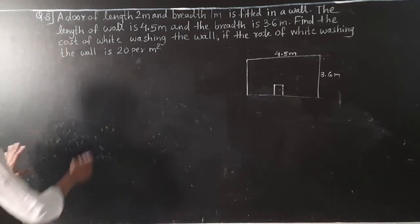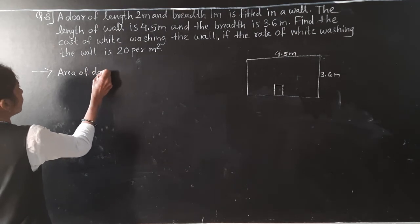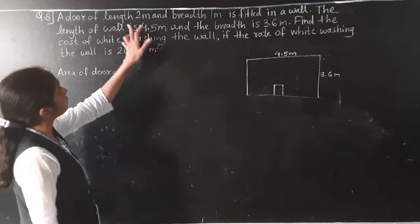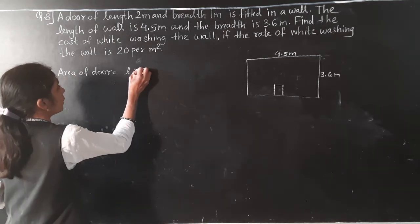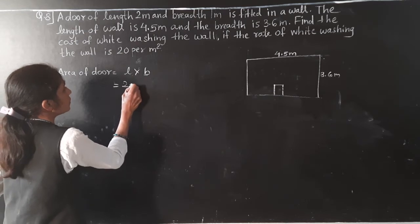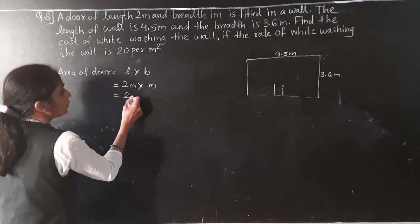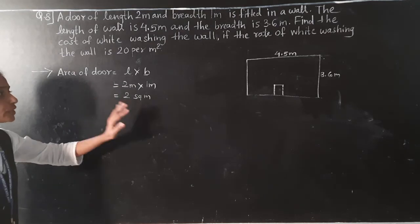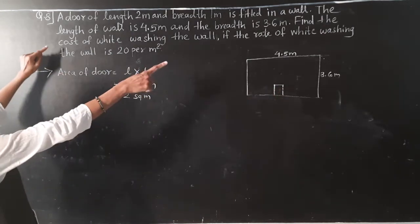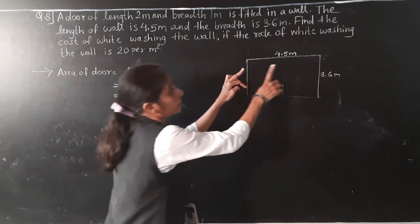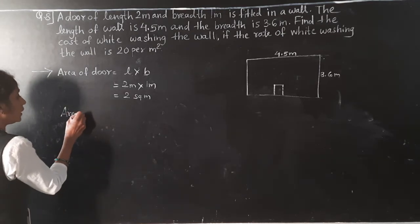Area of door: length is 2 meter and breadth is 1 meter, so length multiplied by breadth equals 2 square meter. Area of door is 2 square meter. Now let's find the area of wall: length of wall is 4.5 meter and breadth is 3.6 meter.